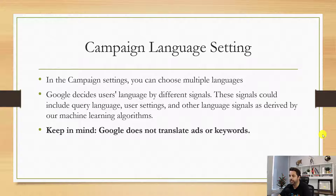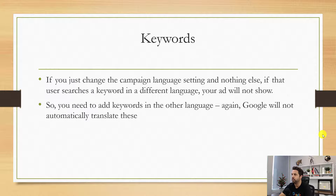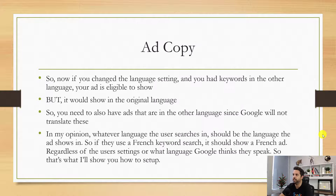The one big thing to keep in mind is Google does not translate ads or keywords. Just because you change your setting or add in a new language does not mean your keywords and ads are going to be translated for you. We need to do that ourselves — they will not do this for you. So if you just change the campaign language setting and nothing else, and a user searches a keyword in a different language, your ad will not show. You need to add keywords in the other language.